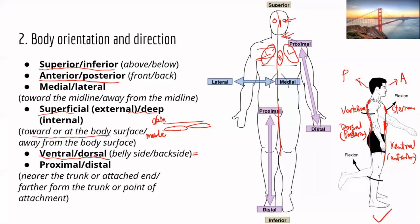Proximal means nearer the trunk or attached end. We usually use these two terms to describe structures of your limbs — your arms and legs — which are attached to the trunk. For example, looking at the elbow and the wrist: the wrist is further away from the trunk, so the wrist is distal to the elbow, and the elbow is proximal to the wrist.